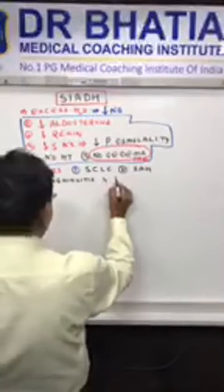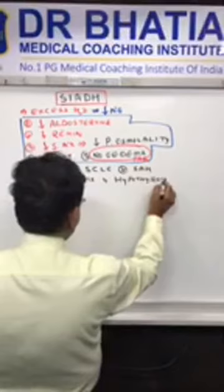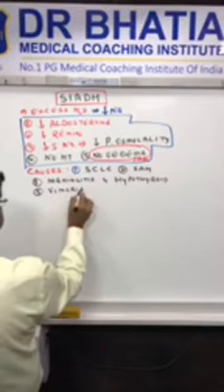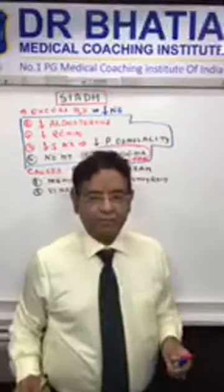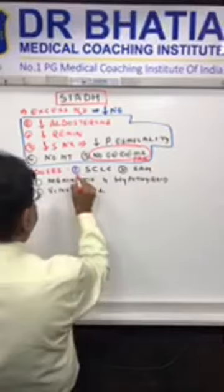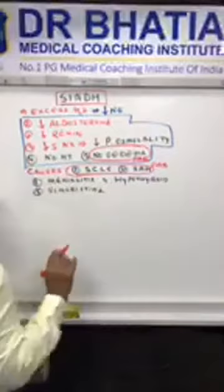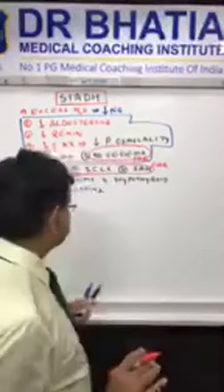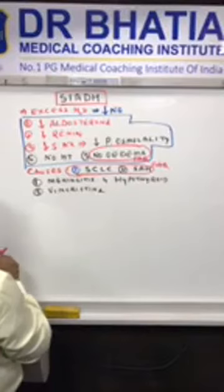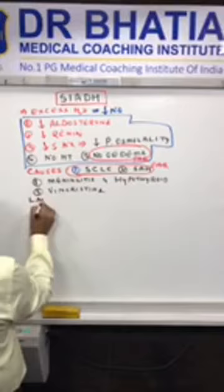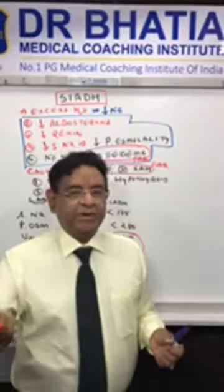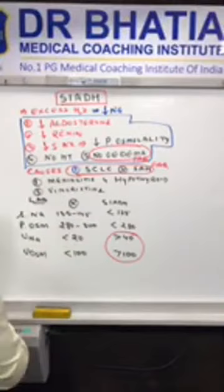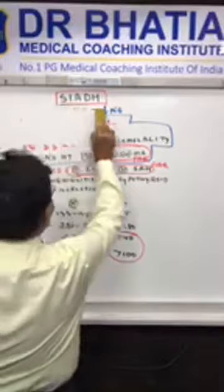Other important causes include hypothyroidism. These five causes are important, and especially the top two are the most frequently asked. Now let's look at the lab parameters. Urine osmolality and urine sodium are increased, because most water has been reabsorbed, making the urine more concentrated — these are the key lab findings.